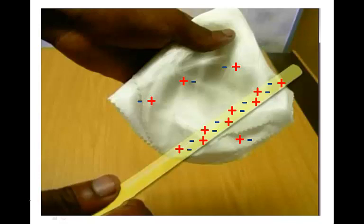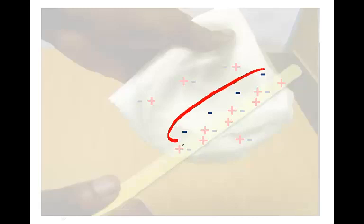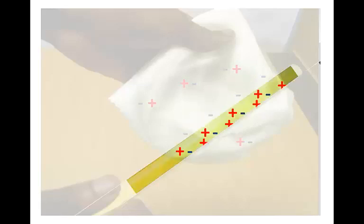We rub these together and as we do so, electrons are rubbed off the glass rod onto the cloth because glass does not hold electrons as tightly as this cloth does. And so those electrons are loose and free to be rubbed off onto the cloth. So there we can see the electrons that have moved from the glass rod onto the cloth.